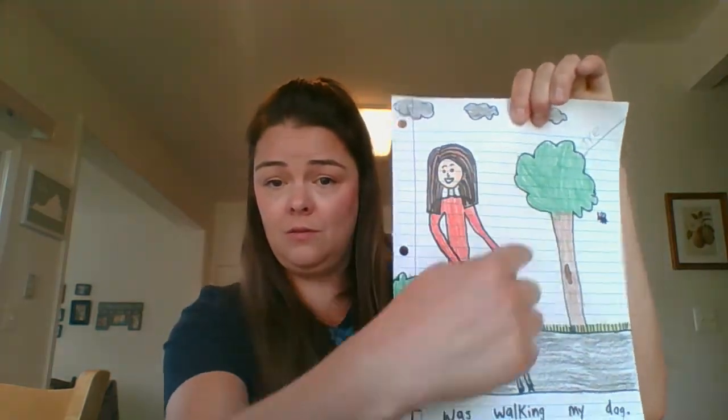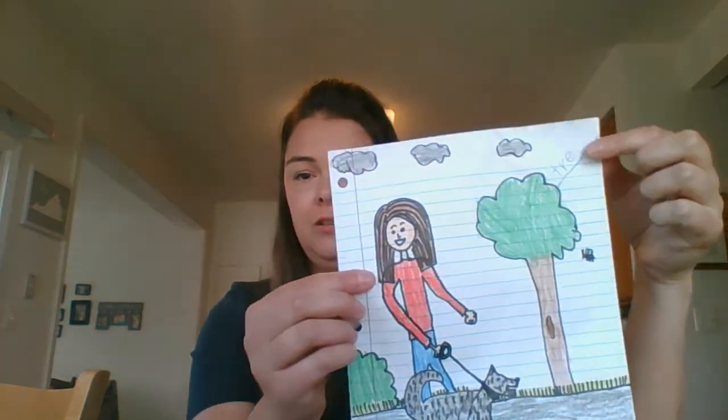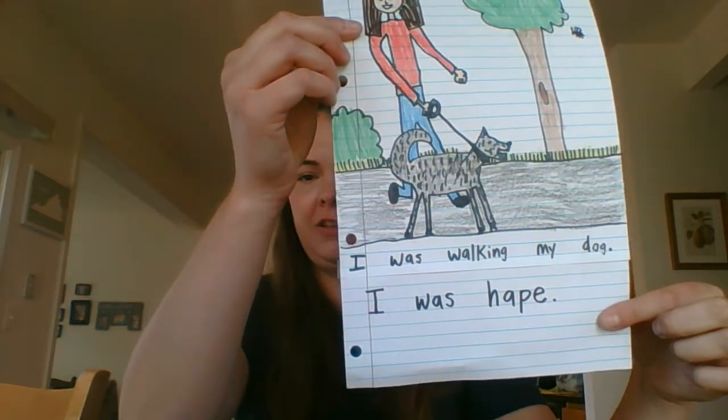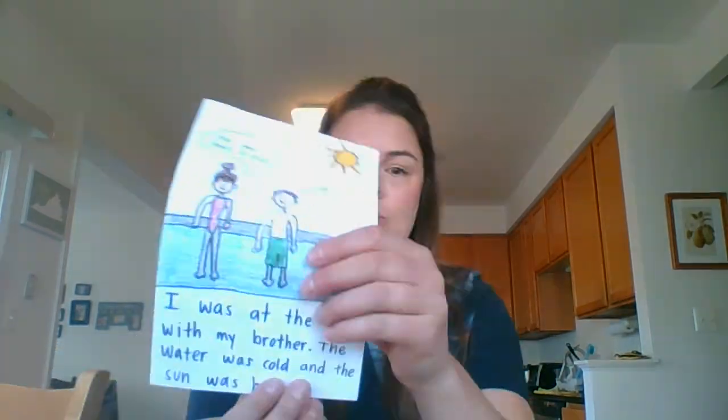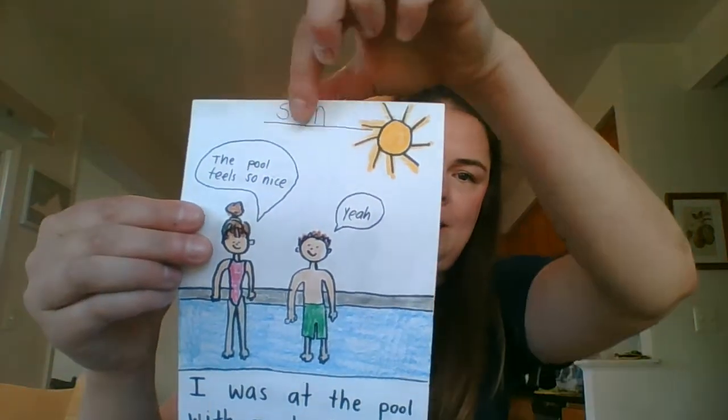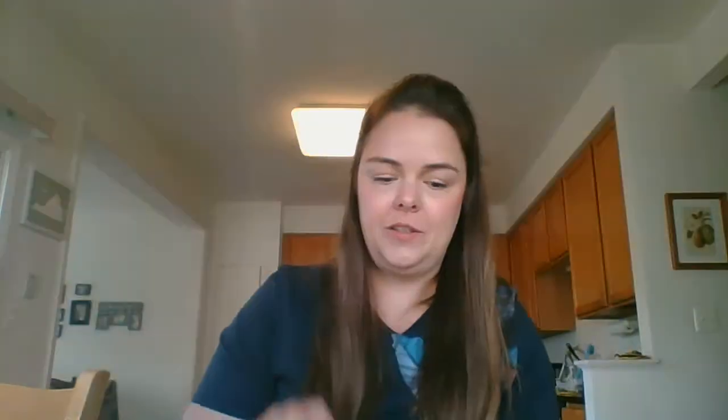So that's what you're going to do. You're going to pick two things that happened to you, draw a picture, and either label or write words, write a sentence. Second page: draw a picture and label or write words. I hope you have a good time — I can't wait to see pictures of what you guys did. Bye friends, stay happy!